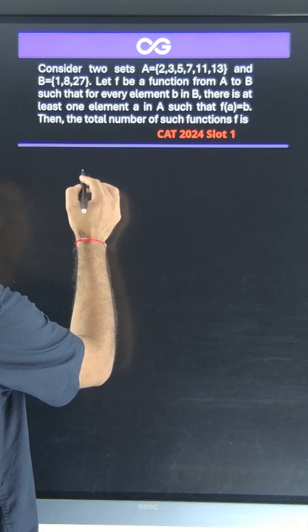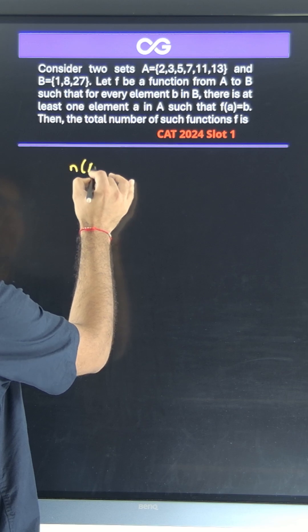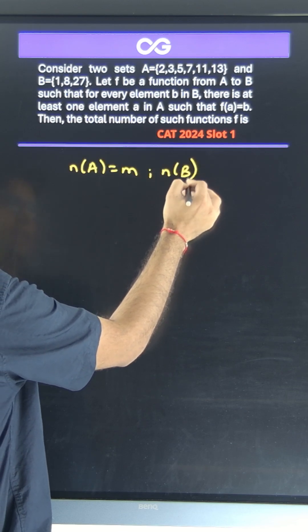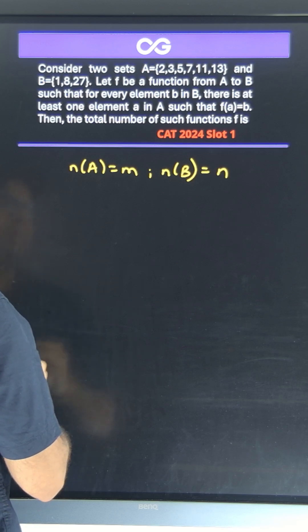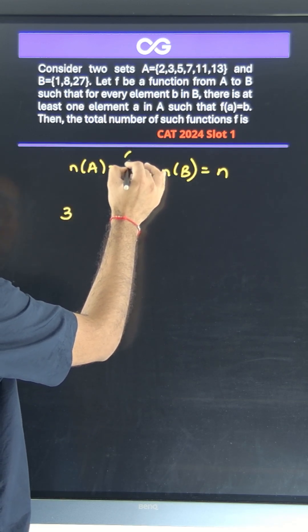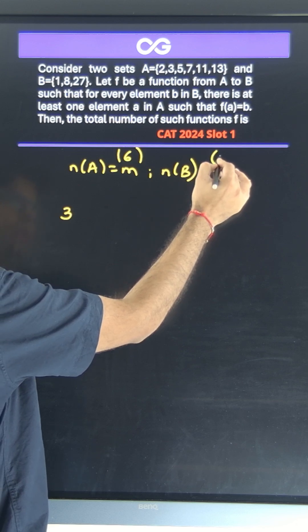If you have n and m as the number of elements, where the number of elements in A is m and the number of elements in B is n, then we get the number of onto functions as n to the power m. So I'll directly write it - yaha par m ki value 6 hai aur n ki value hai 3.